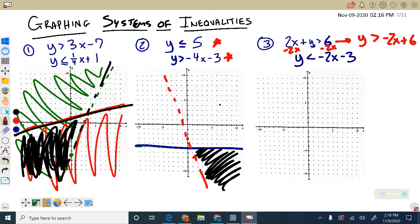So when we do that and graph it, we started at positive 6, down 2 to the right one, or up 2 to the left one. There we go. And it is a dashed line, and we know we're going to be shading above it eventually.